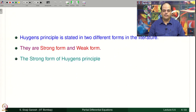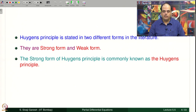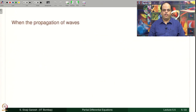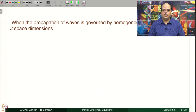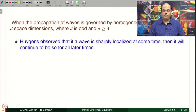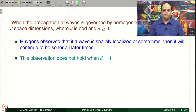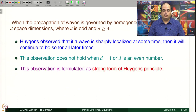The strong form of Huygens' principle is commonly known simply as Huygens' principle — so when someone says Huygens' principle, it means the strong form. When the propagation of waves is governed by the homogeneous wave equation in D space dimensions where D is odd and D ≥ 3, Huygens observed that if a wave is sharply localized at some time, it will continue to be so for all later times. This observation does not hold when D = 1 or D is an even number.